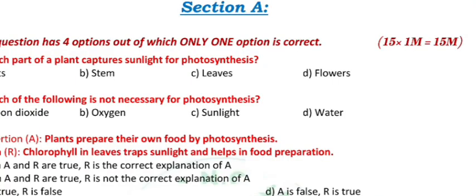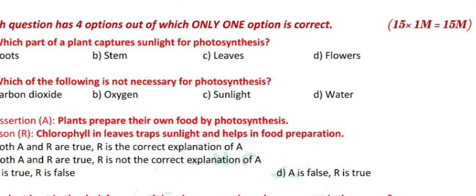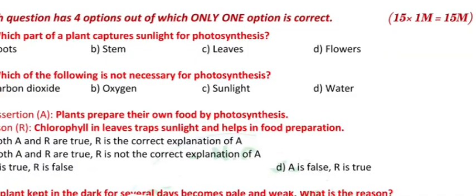Section A: Each question has four options, out of which only one option is correct. For these 15 questions, each question one mark is allotted, so totally 15 marks.